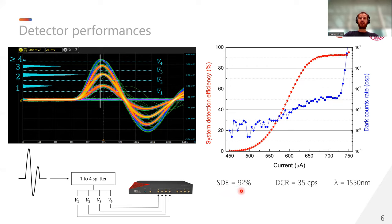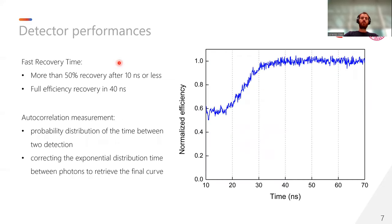Parallel SNSPDs have been proved to possess very high efficiency, more than 90%, with low dark count rate, only tens of counts per second, at the telecommunication wavelength. As I was saying before, since the pixels are much shorter than the conventional SNSPD, here we can see that the detector is back at full efficiency in only 40 nanoseconds. But the most interesting feature is that after only 10 nanoseconds, the overall detector already possesses 60% of nominal efficiency. And this is due to the fact that after one pixel has clicked, there are still all the other pixels that remain active and can detect new incoming photons. This measurement has been performed with an autocorrelation method, in which we acquire the probability distribution of the time between the two detections, and then we correct with the exponential distribution time between the photons in order to retrieve the final curve.